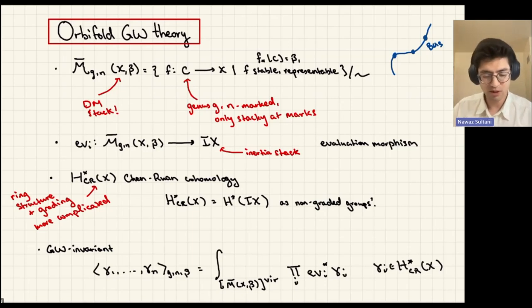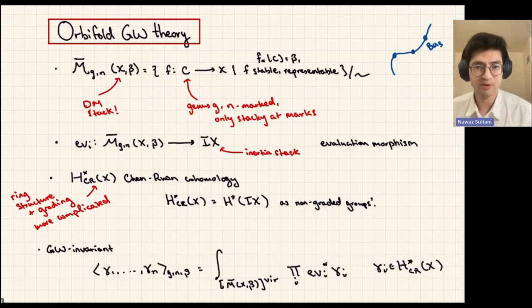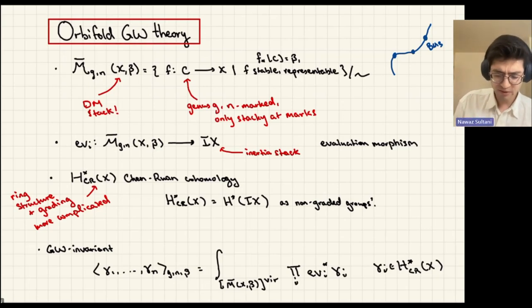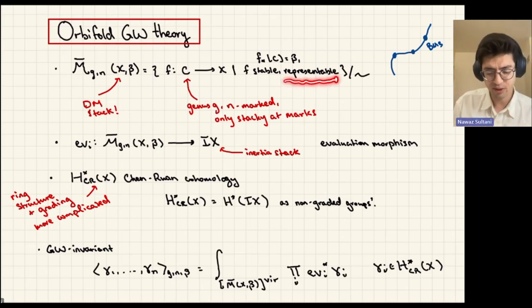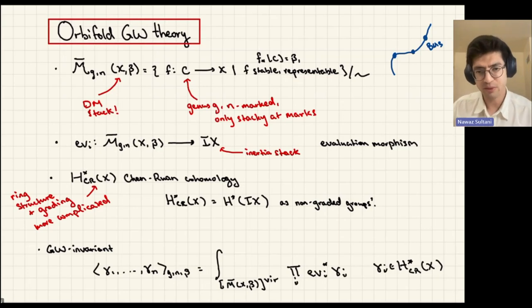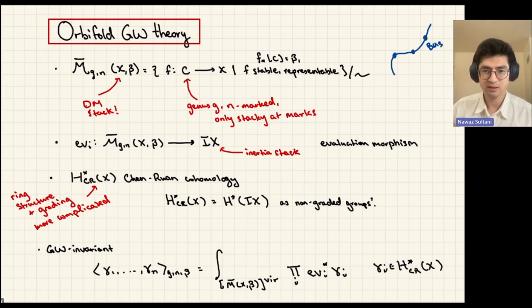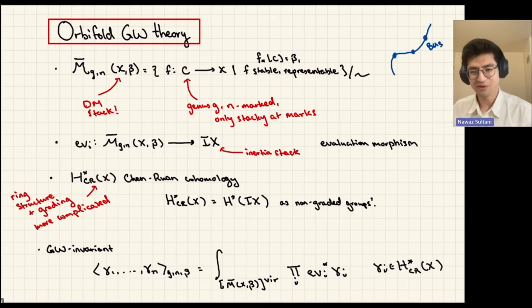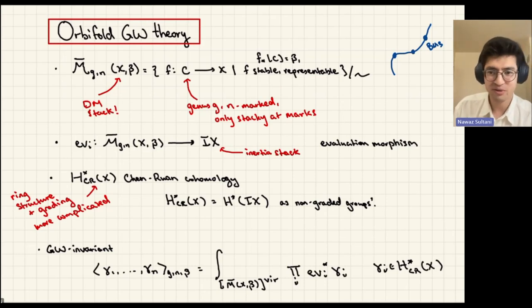There are also additional requirements on these curves. First, you denote a degree that these maps have — you take the pushforward of the fundamental class and it equals some degree beta. You also want stability conditions to ensure the stack is Deligne-Mumford and nice enough to work with, so you impose that the maps have a finite amount of automorphisms. Particular to orbifold Gromov-Witten theory, you require your maps to be representable. This is a technical condition about stacks that I won't get into, but all my morphisms will be representable throughout the talk.